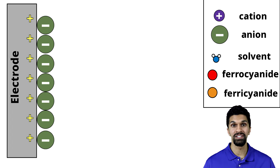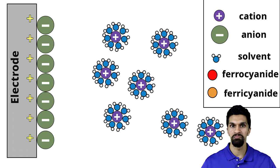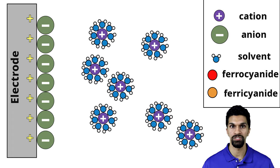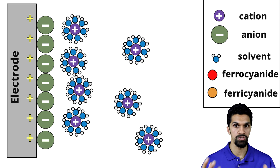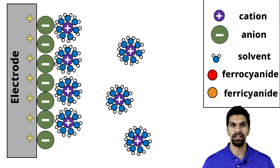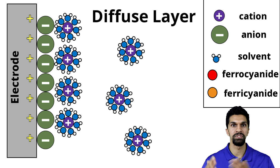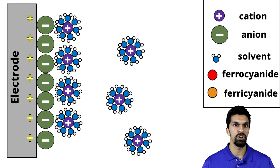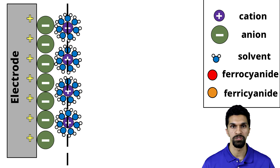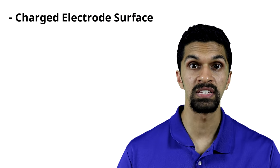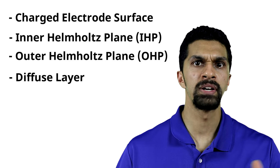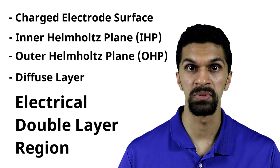This layer of negatively charged anions attracts the positively charged solvated cations in solution. These cations are solvated — surrounded by water molecules or solvent molecules. These solvated cations form a loosely bound layer known as the diffuse layer, extending away from the inner Helmholtz plane into the bulk solution. The layer of solvated cations closest to the inner Helmholtz plane is referred to as the outer Helmholtz plane. Our charged electrode surface, the inner Helmholtz plane, the outer Helmholtz plane, and the diffuse layer all make up what is generally referred to as the electrical double layer region.